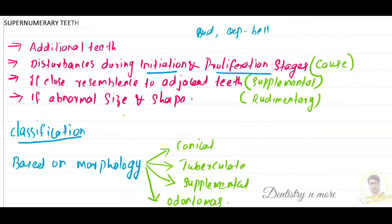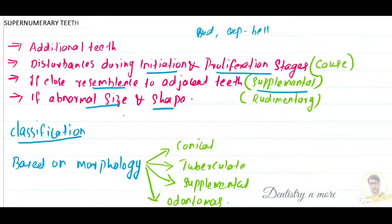Supernumerary teeth are classified based on their resemblance to adjacent teeth. If they resemble the adjacent teeth, they are classified as supplemental. If they have an abnormal size and shape and no resemblance to the adjacent teeth, they are known as rudimentary.